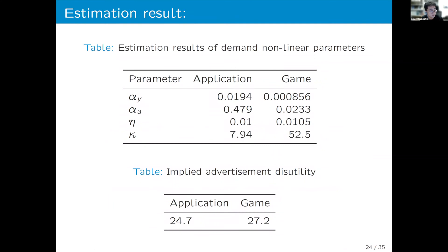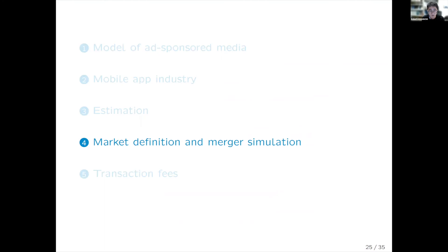From the estimation results, one key takeaway is that the disutility of watching a unit of advertisement is roughly 27 yen — approximately 27 cents in US dollars. This is slightly smaller than numbers known in the literature. Based on this estimated model, we conduct market definition, merger simulation, and then move on to the analysis of transaction fees.